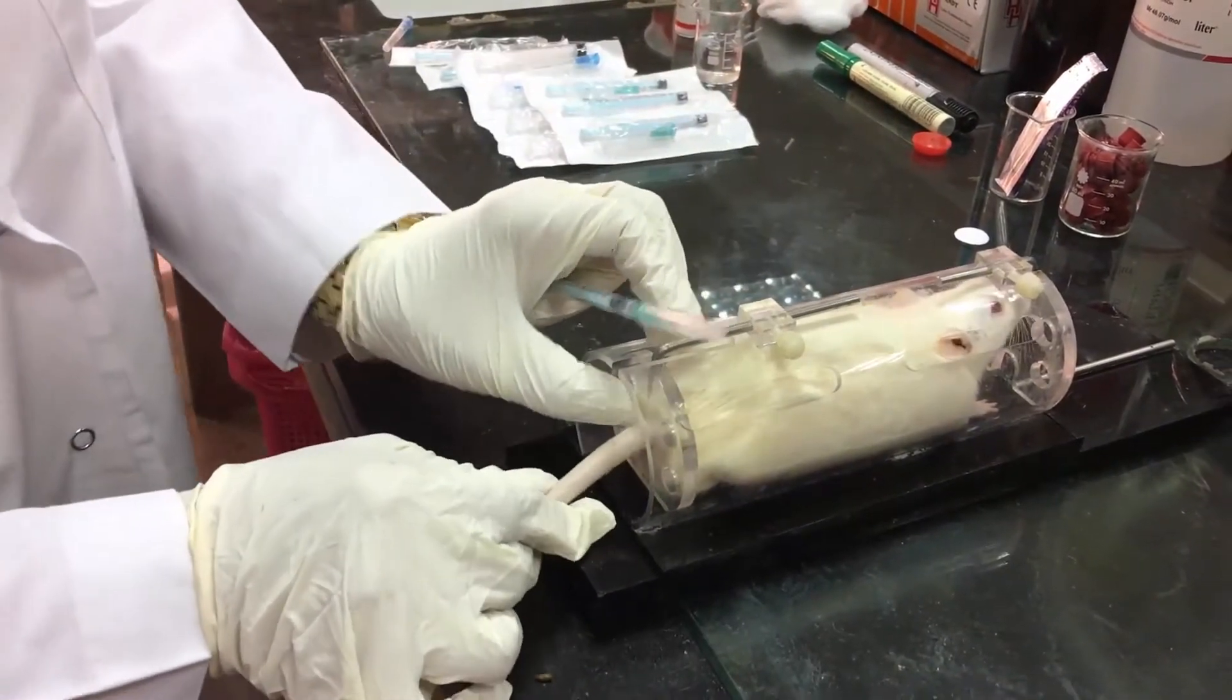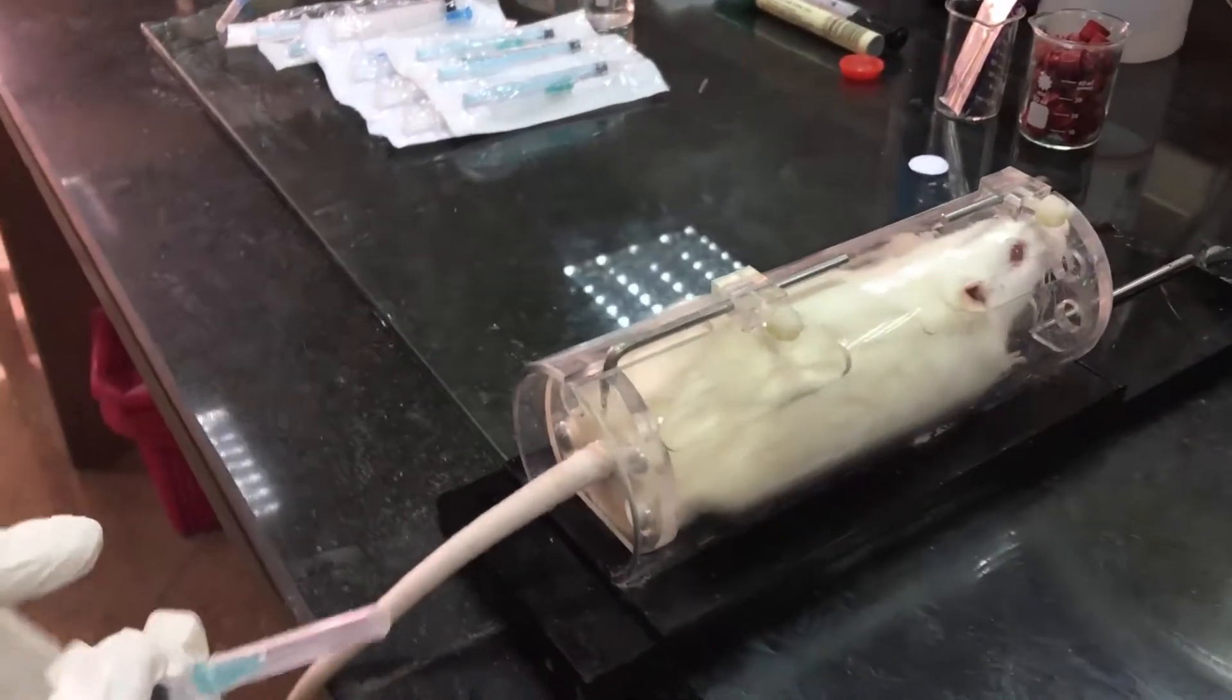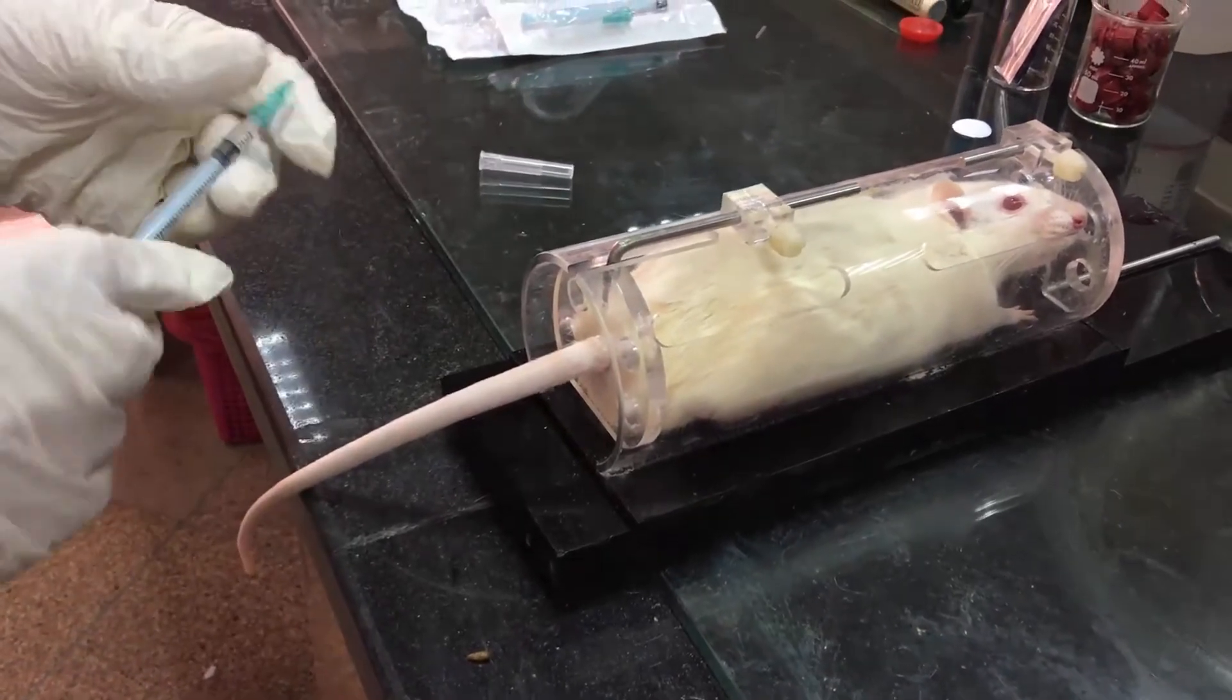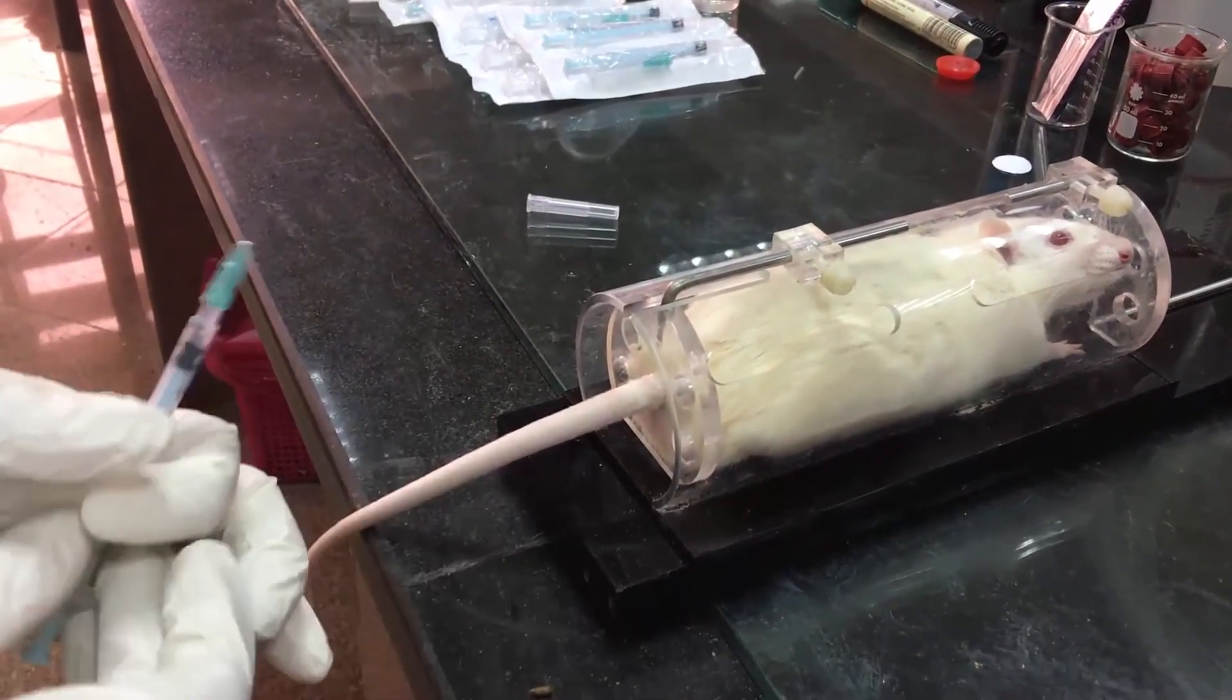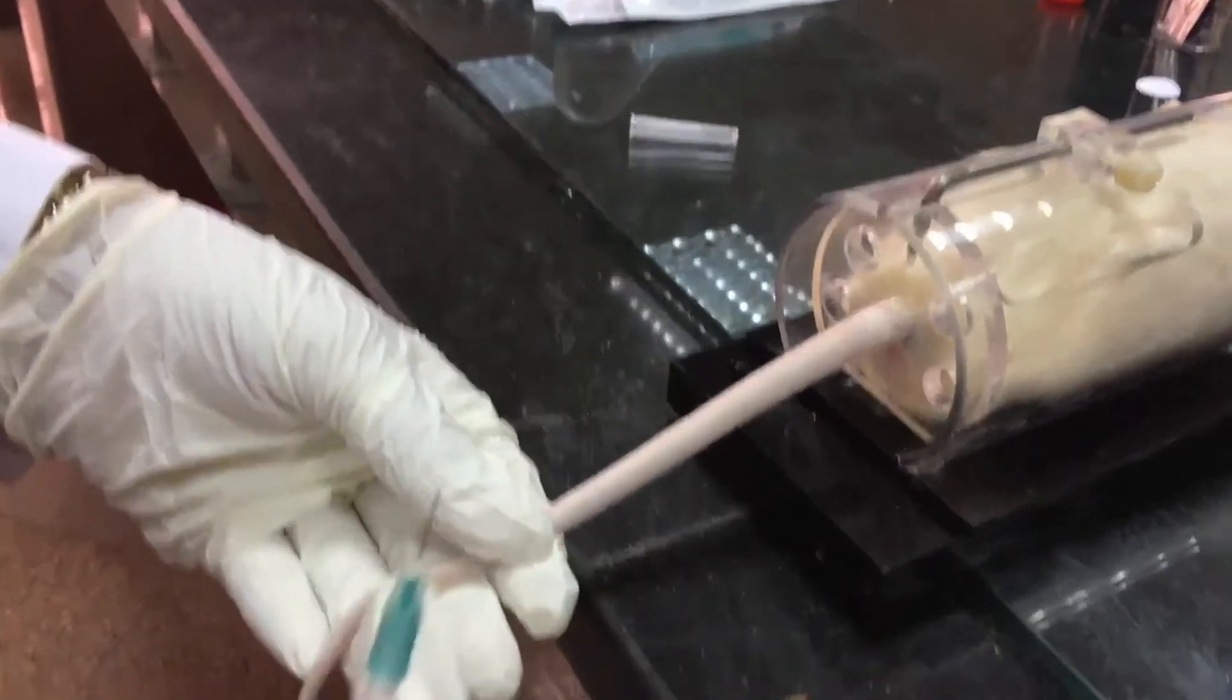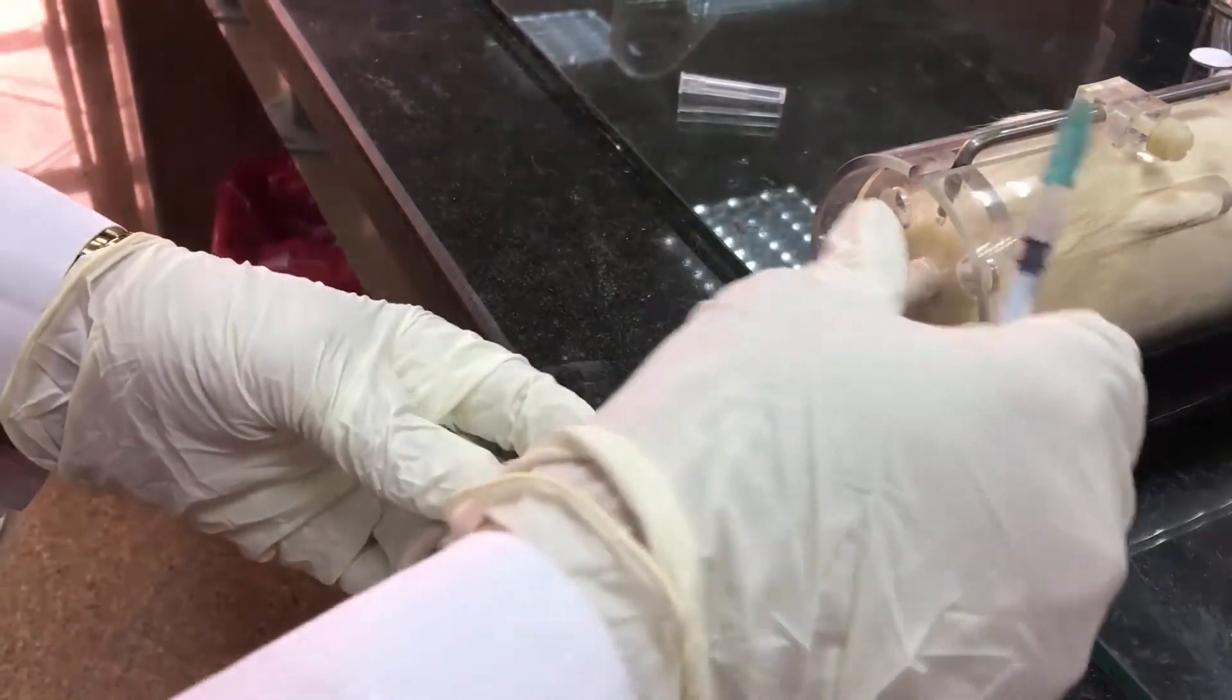Warm the rat tail using warm water, under a heat lamp, or very simply by massage so as to help venous congestion. The vein of the tail will be congested, especially the lateral vein, which will be clear and easily accessed.